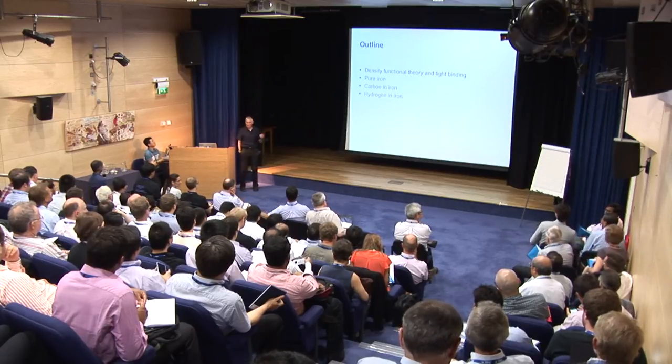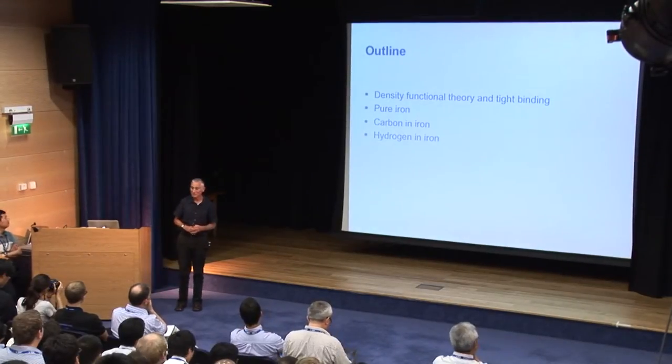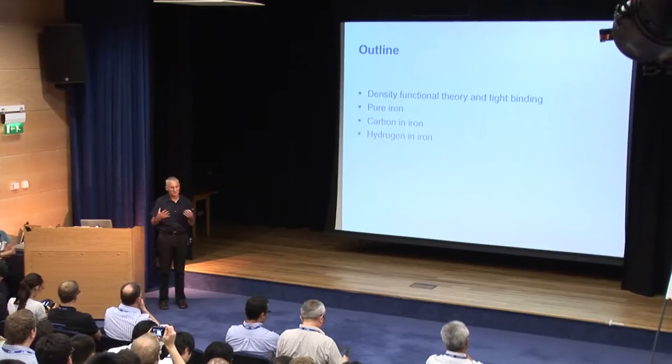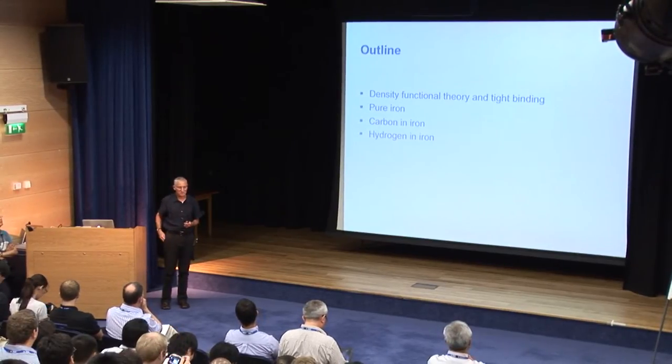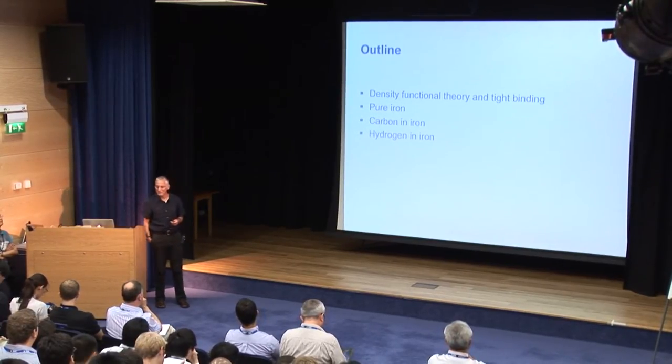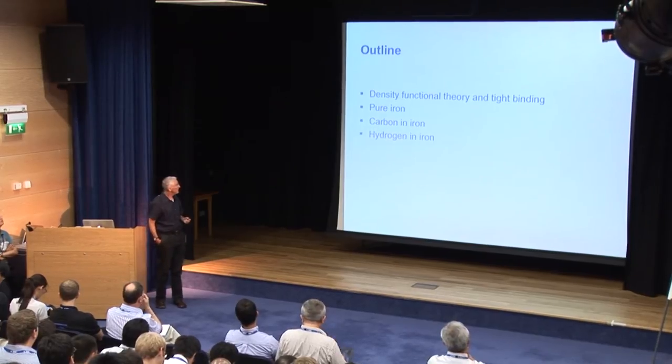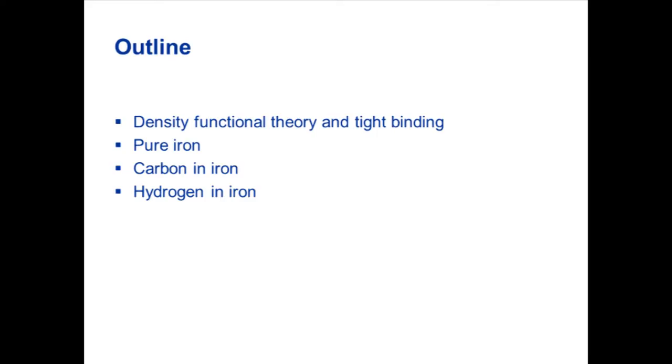The point is that the electrons form the glue which holds the atoms together in any piece of condensed matter. That's the nature of the situation in both chemistry, physics, and physical metallurgy. In any study of condensed matter, one has to solve the Schrödinger equation for the electrons which are holding the nuclei together. And ultimately that has to be what's responsible for the mechanical properties of the material, and this is done through the density functional theory.